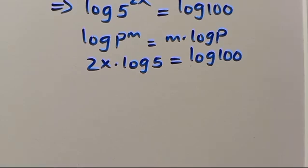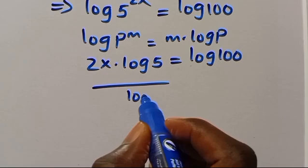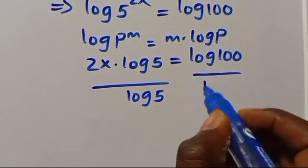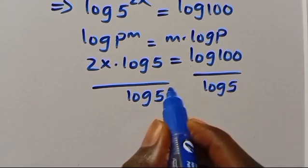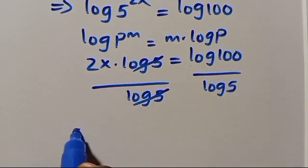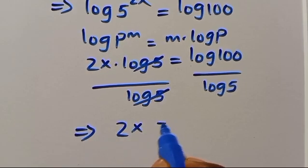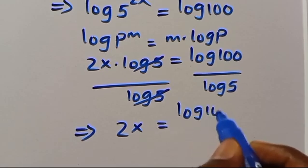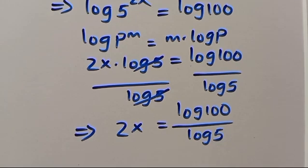From here, let's divide both sides by log 5. This cancels out, so we have 2x equals log 100 over log 5.